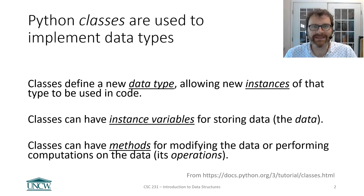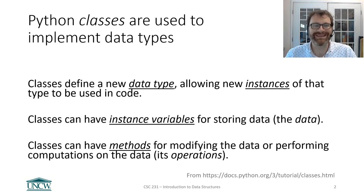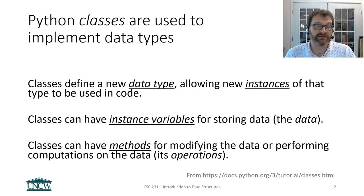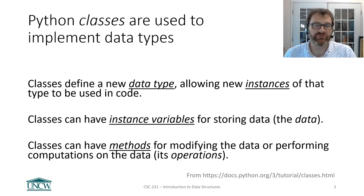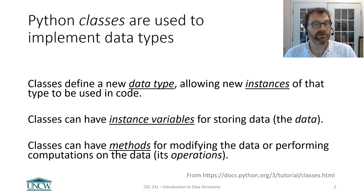In Python, classes define a new data type — just like you have the string class, int class, etc. — allowing new instances of that type to be used in code. Classes have instance variables for storing data. Remember, data types have two things: data and operations. In Python classes, the data are kept in what we call instance variables. We'll talk about instance variables in the next video. The second thing you get with a data type are the operations, and in Python classes these are called methods.